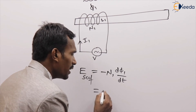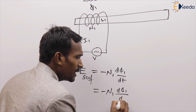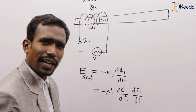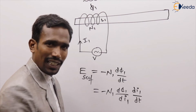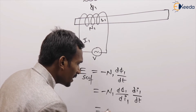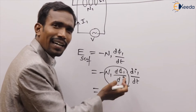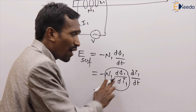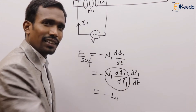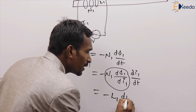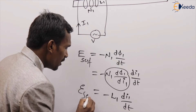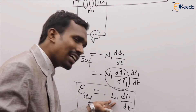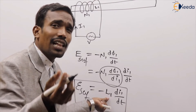With a small modification, we write it as minus N1 into dφ by di1, multiplied by di1 by dt. Now, N1·φ1 by i1 is nothing but L1 — the self-inductance. So the self-induced EMF in this coil equals L1 into di1 by dt. This is called the self-inductance.